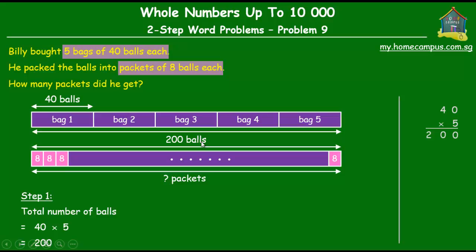Now he took the 200 balls and he re-packed them into smaller packets of eight balls each. So then to find out how many packets he got, all we have to do is divide the 200 balls by eight because he made packets of eight balls each. So all we do is we take 200 and we divide that by eight.